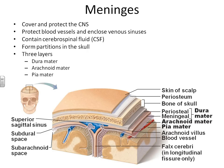The meninges cover both the brain and the spinal cord and are composed of three different layers. Within the meninges is where the cerebrospinal fluid is found. This picture shows us outside the skin, then underneath the skin the periosteum and the bone. Directly below the bone, we can see the two layers of the outermost portion of the meninges called the dura mater. The dura mater is the thicker, tougher portion of the meninges.